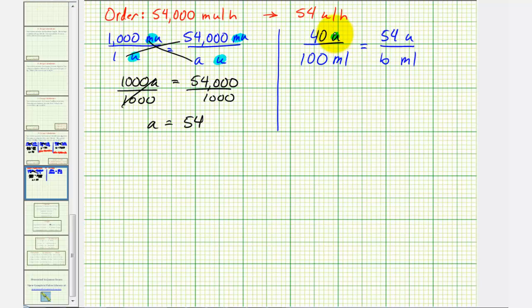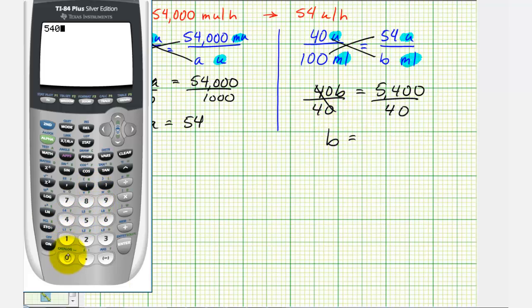And finally, once again, we have the same units on the top, same units on the bottom. So now we can cross multiply and solve for b. So we have 40 times b, that's 40b, equals 100 times 54, that's 5,400. Divide both sides by 40. 5,400 divided by 40 is equal to 135.